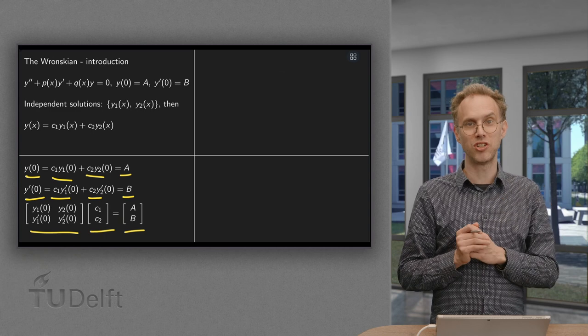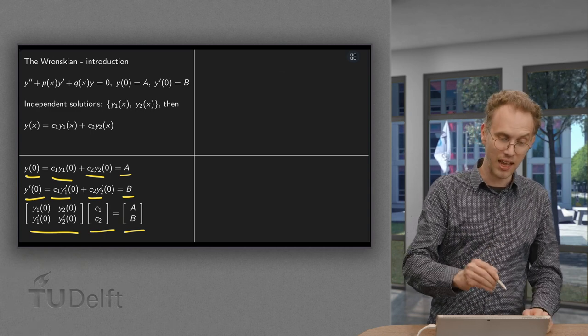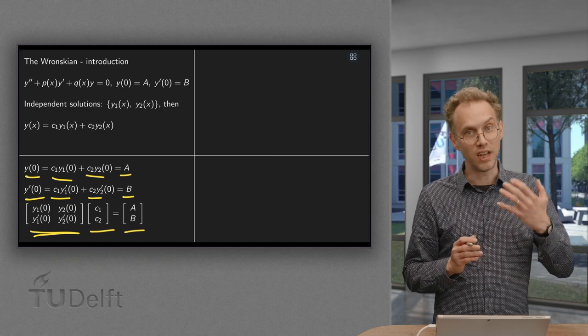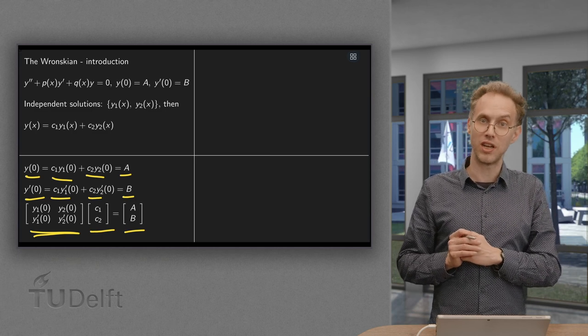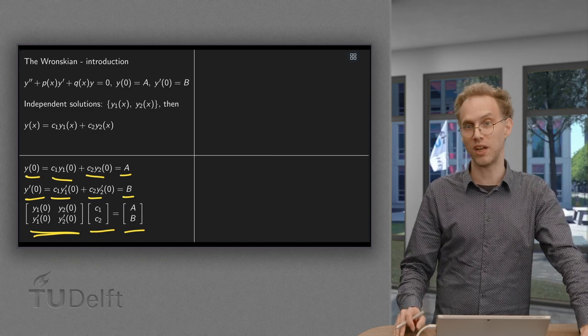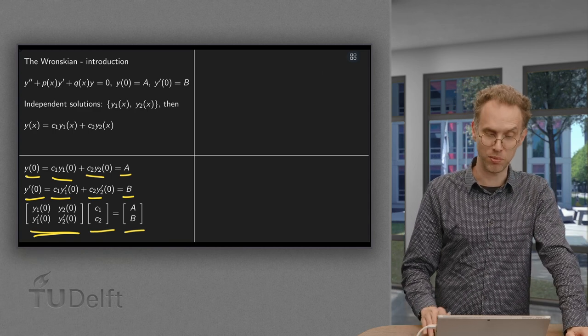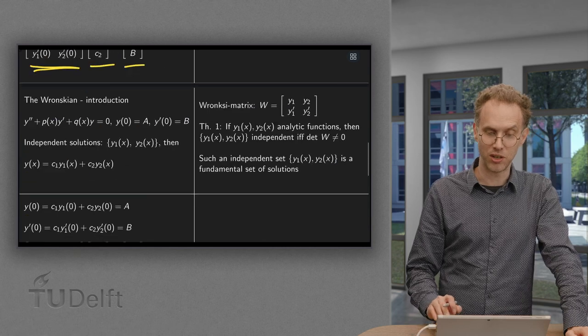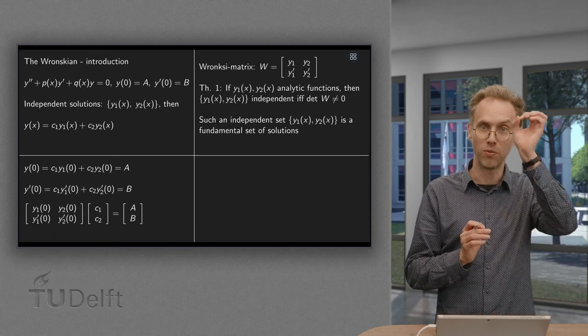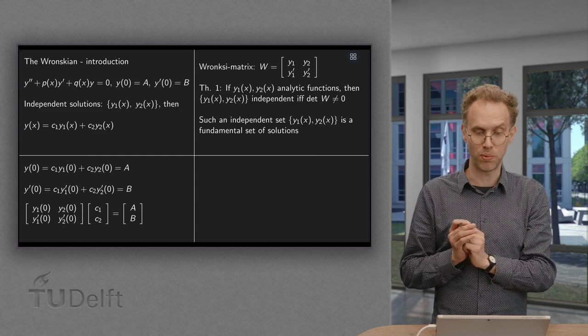And that gives us the right idea. If this matrix here is invertible, then we can find our c1 and c2, regardless of what A and B we have chosen. So we want this matrix to be invertible. We will call this matrix the Wronskian matrix W, consisting of y1, y1', y2 and y2'.